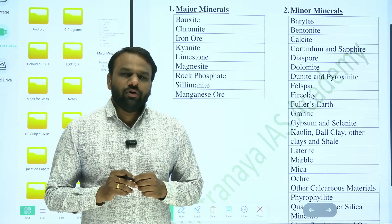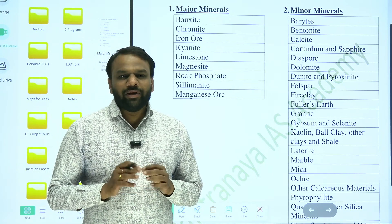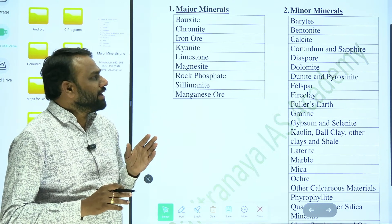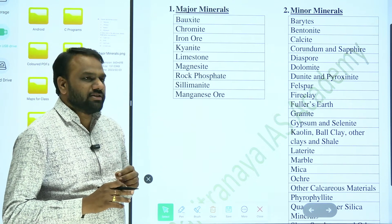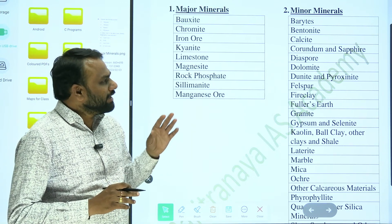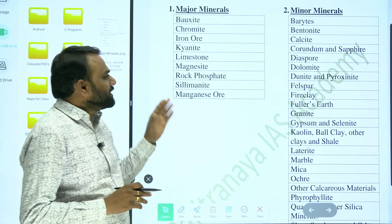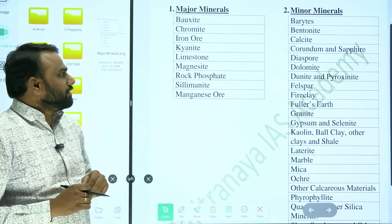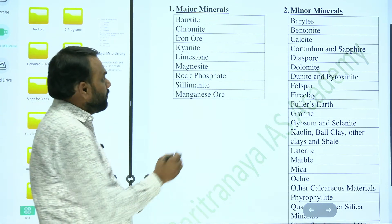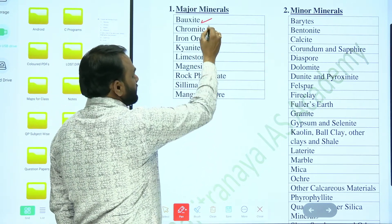All the mineral resources have been classified into major and minor minerals. As per the definition of the government, this is the classification. In major minerals we have bauxite,